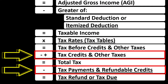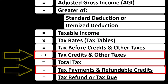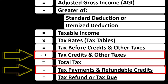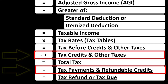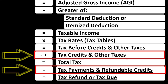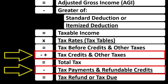Noting that credits and deductions are both good, but a dollar credit versus a dollar deduction — the credit is typically better because you get the full dollar amount of the credit, as opposed to a dollar deduction which only decreases taxable income, upon which the tax is then calculated.